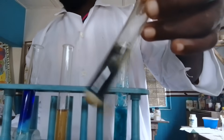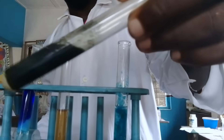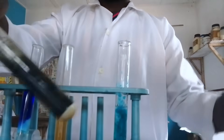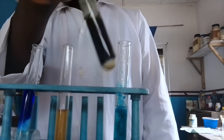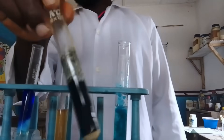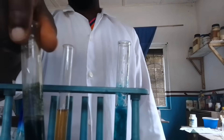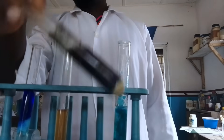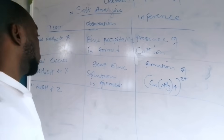Now if you look at it very well, it is greenish in color and it looks dirty. So the observation is: dirty green precipitate is formed. Under the inference: iron two ion — Fe²⁺ — is present.